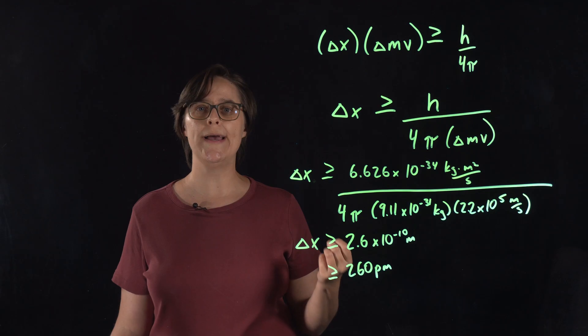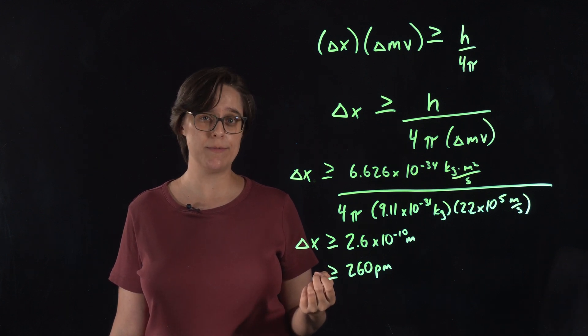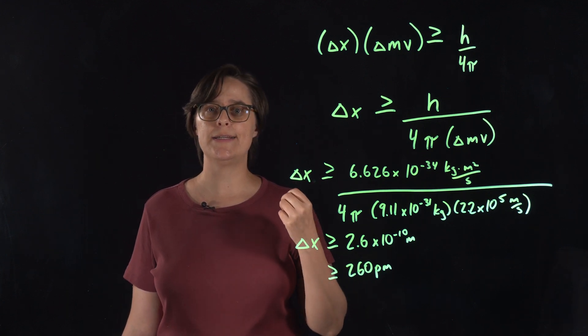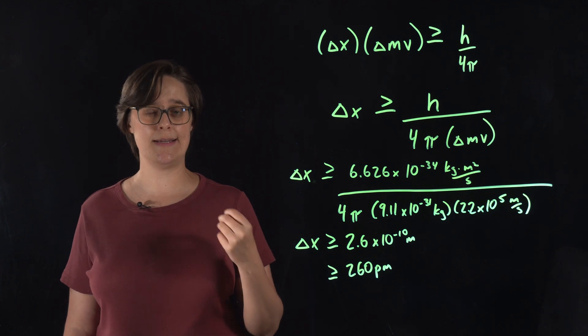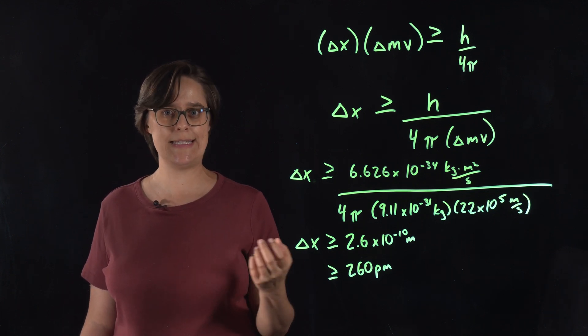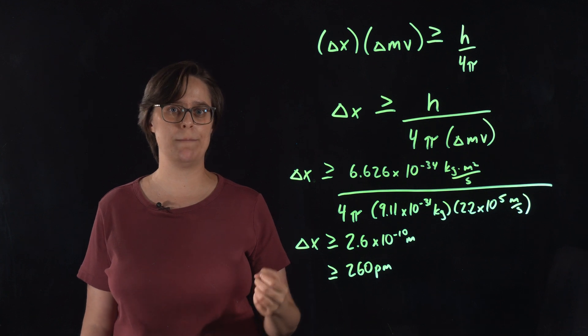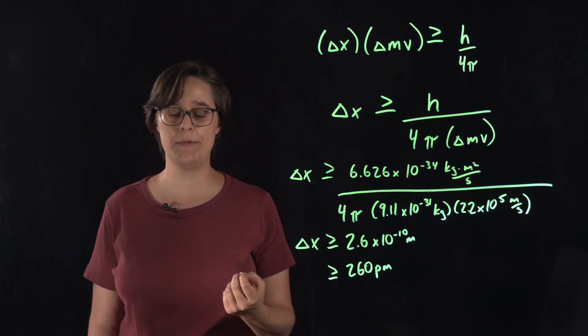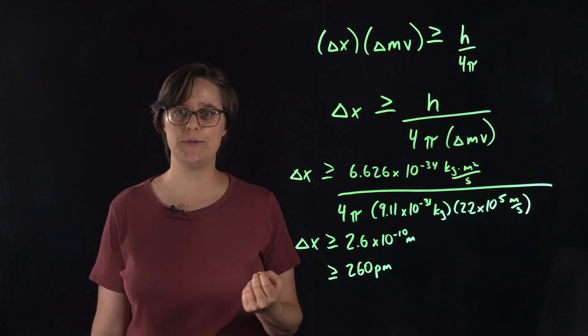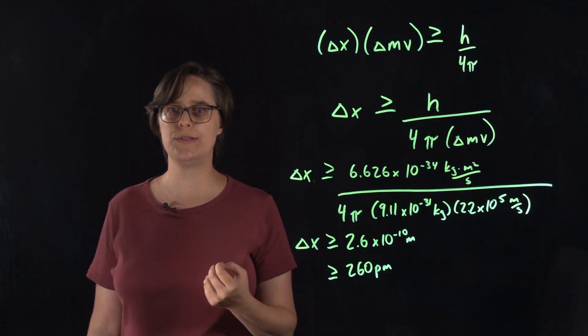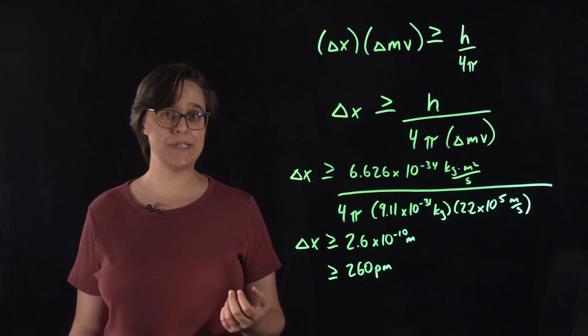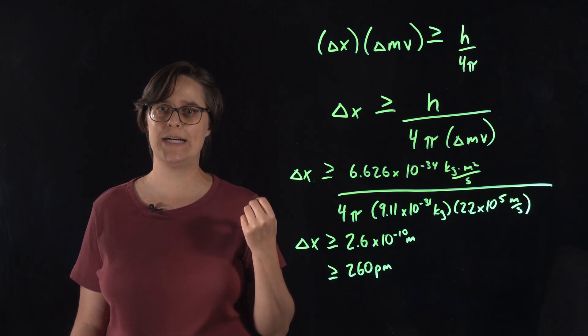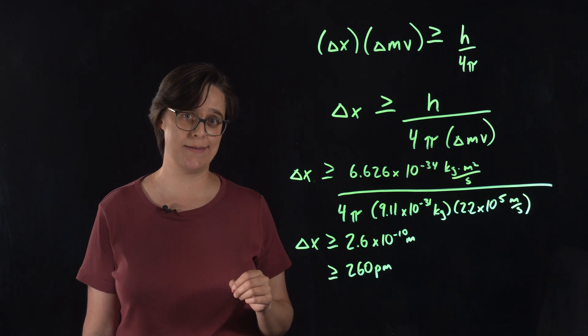So why is Heisenberg's uncertainty principle important? He disproved the idea that electrons travel in fixed orbits, like they did in Niels Bohr's model of the atom. Instead, electrons are best described by probability distributions. In other words, we can determine regions where electrons are likely to be found, but not defined paths.